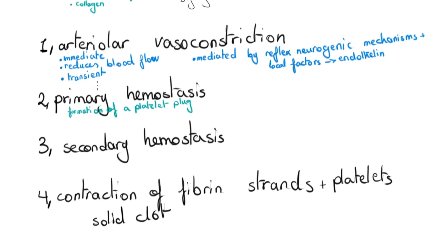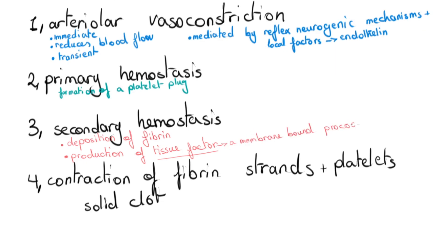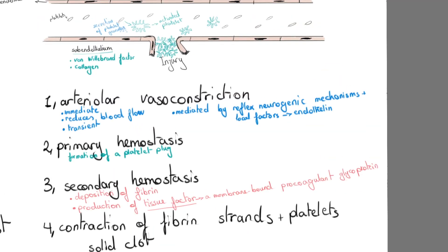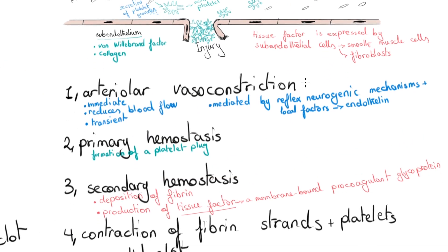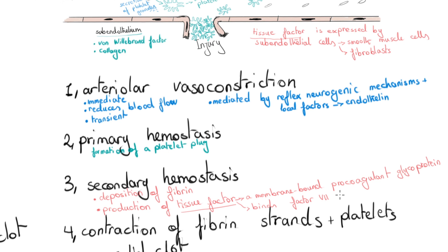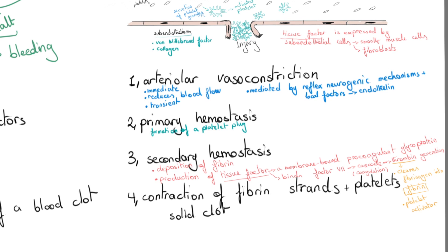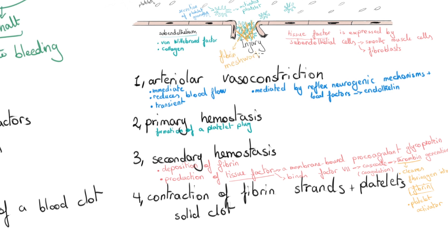The third step is secondary hemostasis, or deposition of fibrin. This step involves production of tissue factor at the site of injury. Tissue factor is a membrane-bound procoagulant glycoprotein expressed by subendothelial cells such as smooth muscle cells and fibroblasts in the vessel wall. It binds and activates factor 7, which activates a cascade ending in thrombin generation — the coagulation cascade. Thrombin cleaves circulating fibrinogen into insoluble fibrin, creating a fibrin meshwork, and also activates additional platelet aggregation.